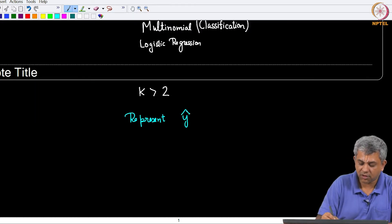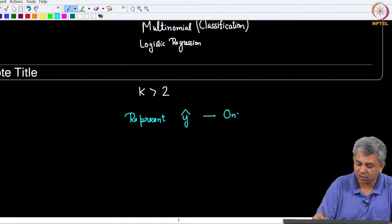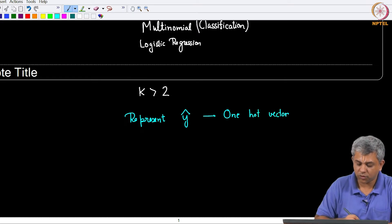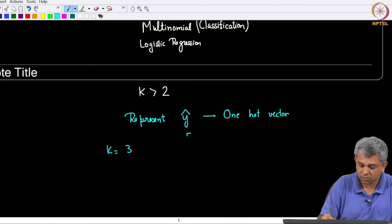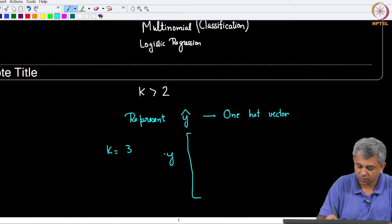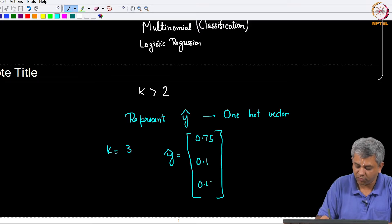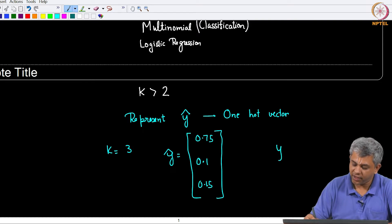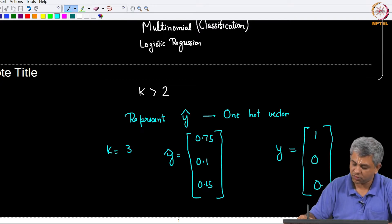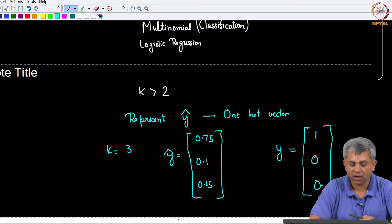The first thing is representation of Y-hat. This we can do with the one-hot vector. So in case K is equal to 3, Y-hat will have three numbers — suppose something like 0.75, 0.1, 0.15 — and Y itself could be [1,0,0] or [0,1,0] or [0,0,1]. So you have something of this sort which represents Y-hat.